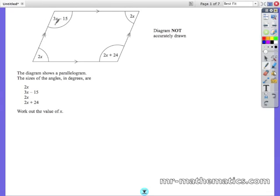In a quadrilateral, the four angles all add up to 360 degrees, so I'm going to write this as one sum. So 3x take away 15 plus 2x plus 2x add 24 plus the final angle 2x equals 360.